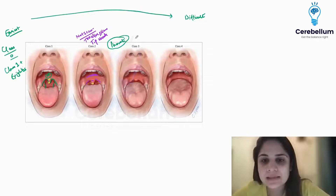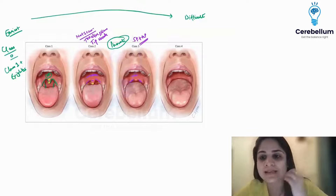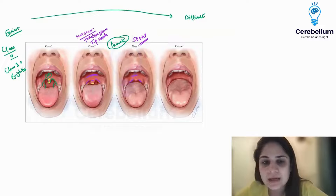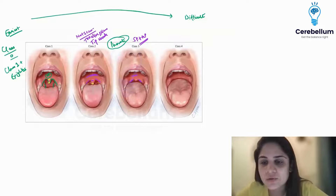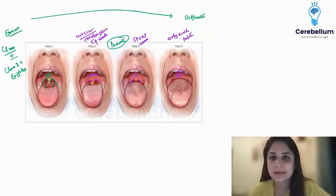In Mallampati class 3, we see soft palate plus hard palate only. You cannot see the uvula — neither the tip nor the base. In Mallampati class 4, you see only the hard palate — only the hard palate.